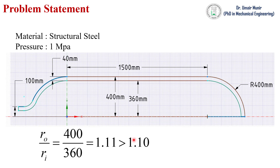For this case shown in the figure, the ratio of outer radius to inner radius is greater than 1.10, so we will consider this a thick wall pressure vessel. The outer radius is 400 mm and the inner radius is 360 mm, so the wall thickness of this pressure vessel is 40 mm.